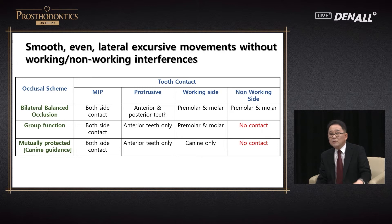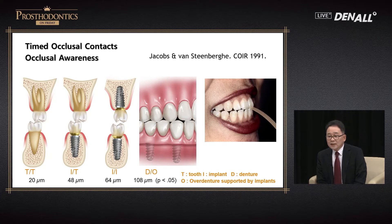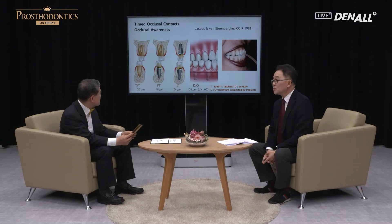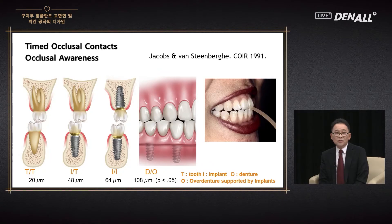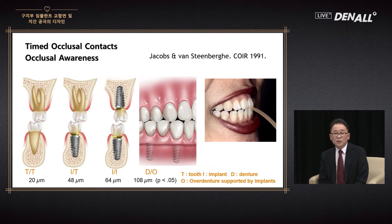Except for bilateral balanced occlusion, regarding the non-working interference, contact should not be made. This is a famous article — Jacobson and Atoll published it in 1991. In English, it is termed 'timed occlusal contacts,' in other words, occlusal awareness — recognizing the occlusal force within the mouth.